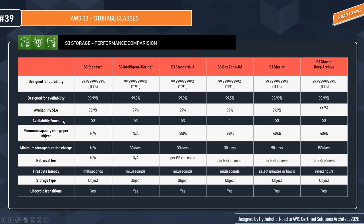The biggest difference in availability zones is for One Zone IA, which stores data in one availability zone, while all others store in a minimum of three. Minimum capacity charge per object is 128 KB for Standard IA and One Zone IA, and 40 KB for Glacier and Deep Archive. There is a 30-day minimum storage constraint for Intelligent Tiering, Standard IA, and One Zone IA; 90 days for Glacier; and 180 days for Glacier Deep Archive.